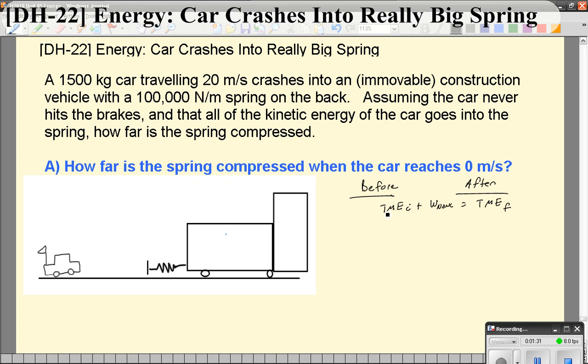In this problem, because this car does not change height at any point, we're going to assume the gravitational potential energy is the same before as it is after. We don't need to worry about it. We're going to assume that the kinetic energy of this vehicle, this little car, is zero when it stops. We're going to assume this truck stays at zero the whole time.